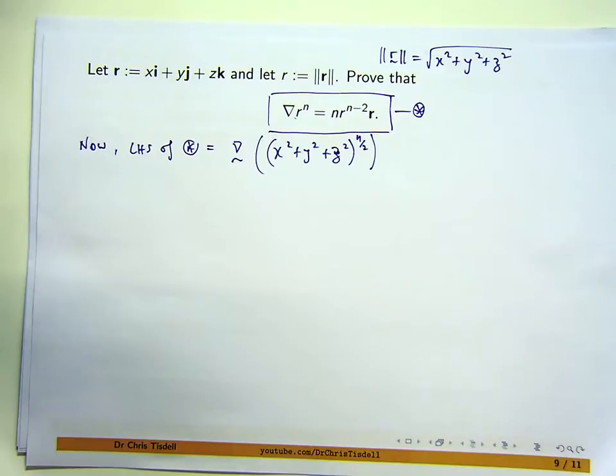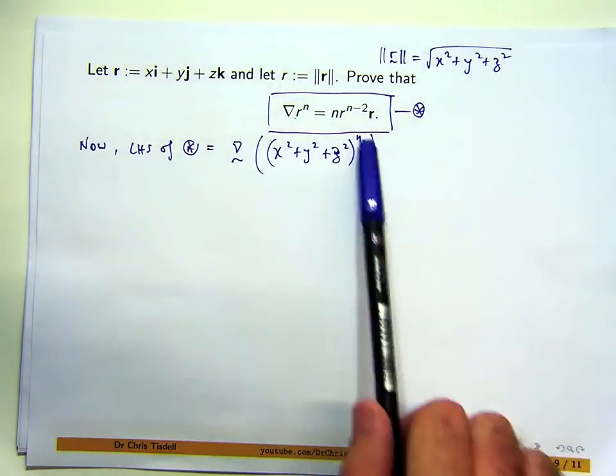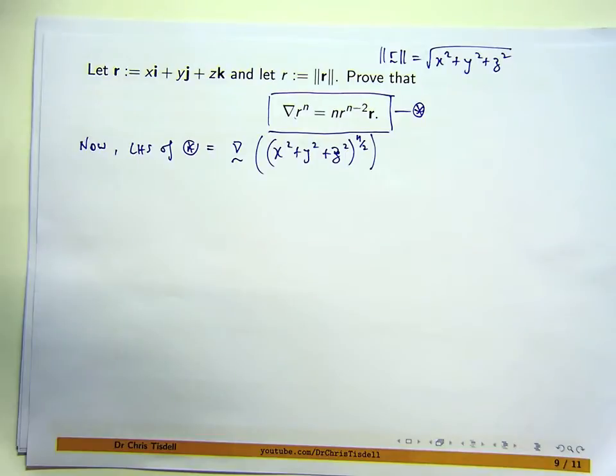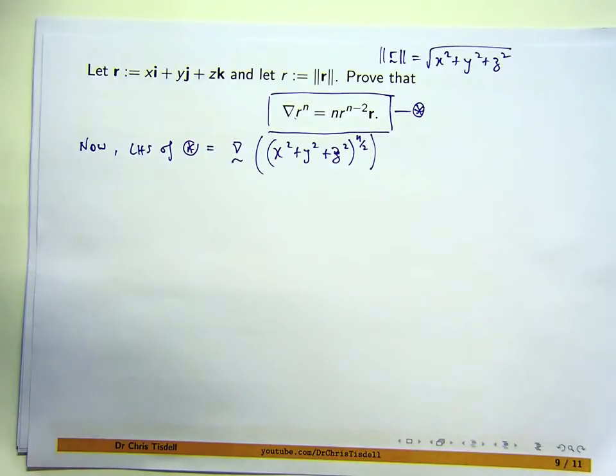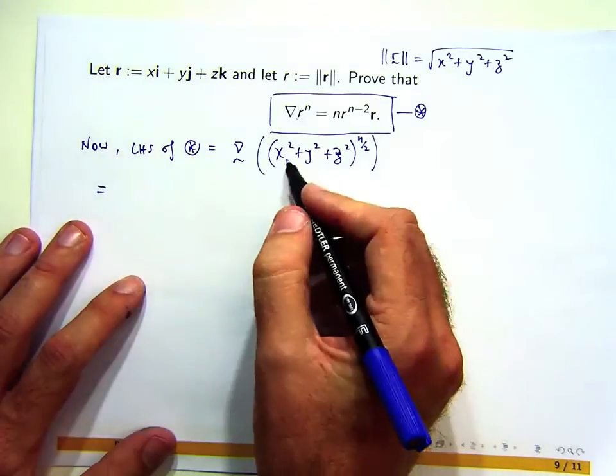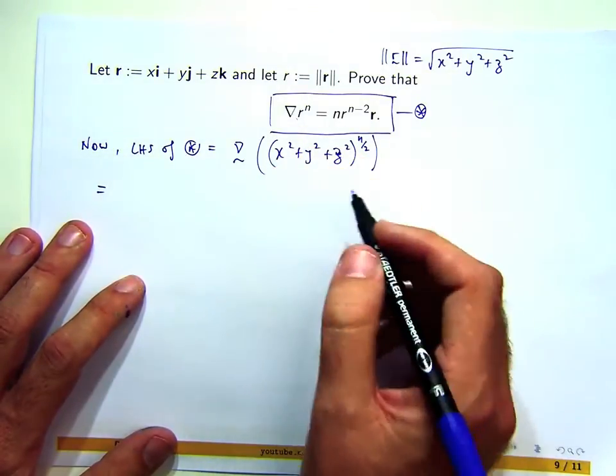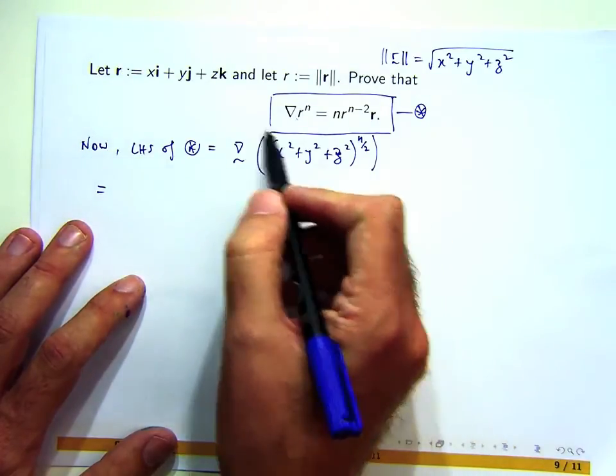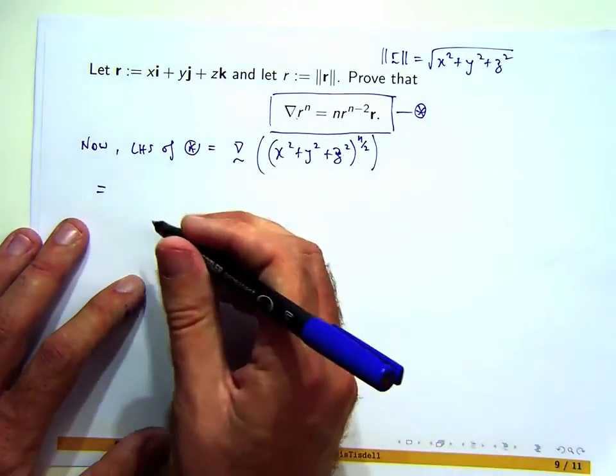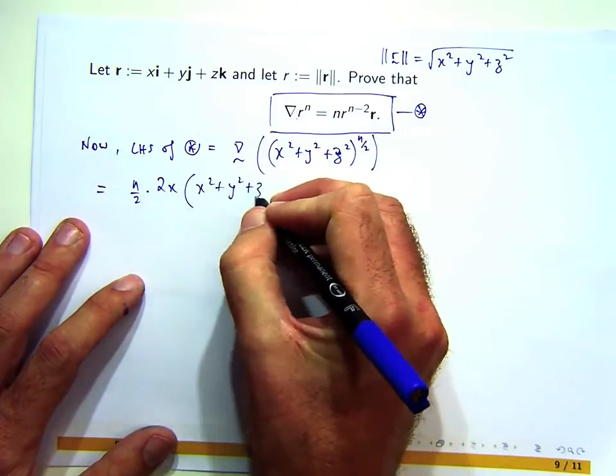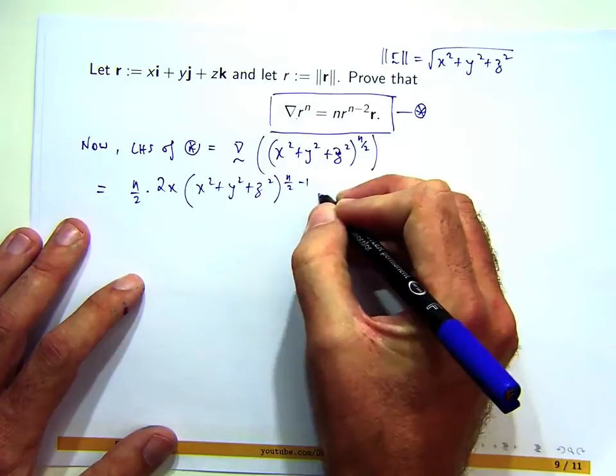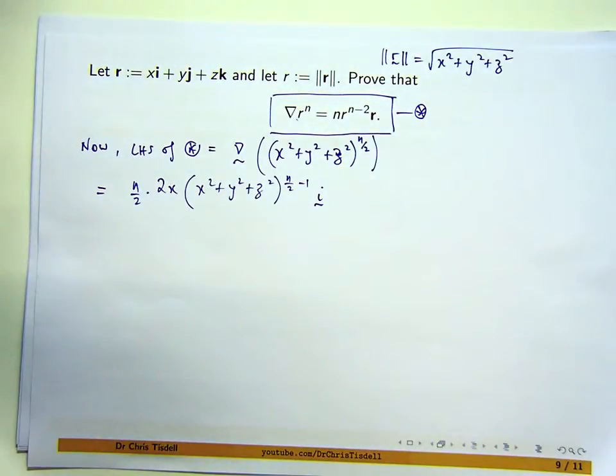So what is the gradient of this? Well, you calculate the partial derivative of this with respect to x, that'll be the first component of the vector. You calculate the derivative of this with respect to y, that'll be the second component of the vector. And you calculate the partial derivative of this with respect to z, and that'll be the third component of your vector. So let's take the partial derivative of this with respect to x. What's going to happen? The n on 2 is going to come to the front, the 2x is going to come to the front and you decrease the power by 1.